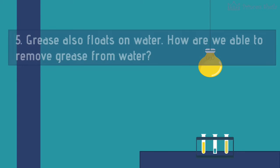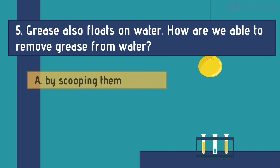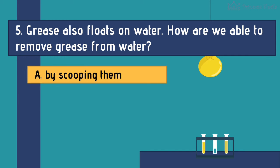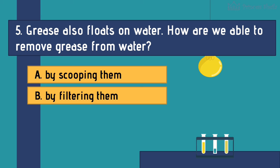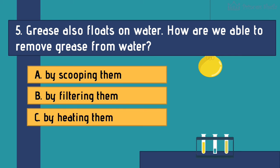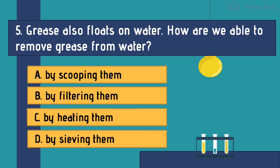Number 5: Grease also floats on water. How are we able to remove grease from water? A. By scooping them. B. By filtering them. C. By heating them. D. By sieving them.